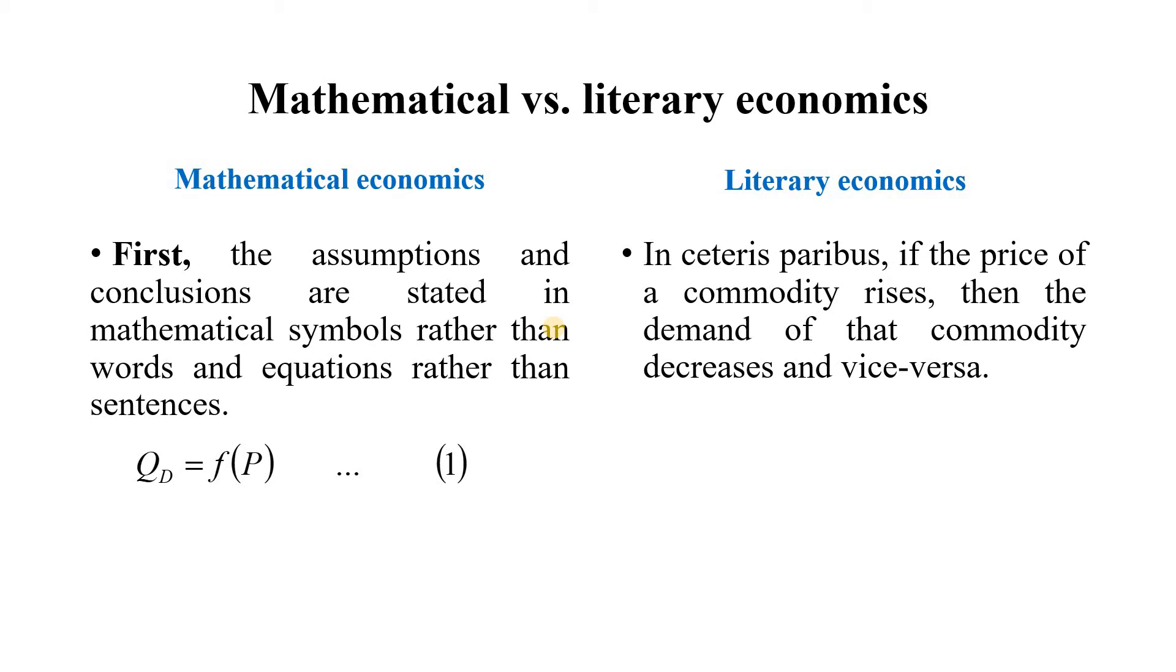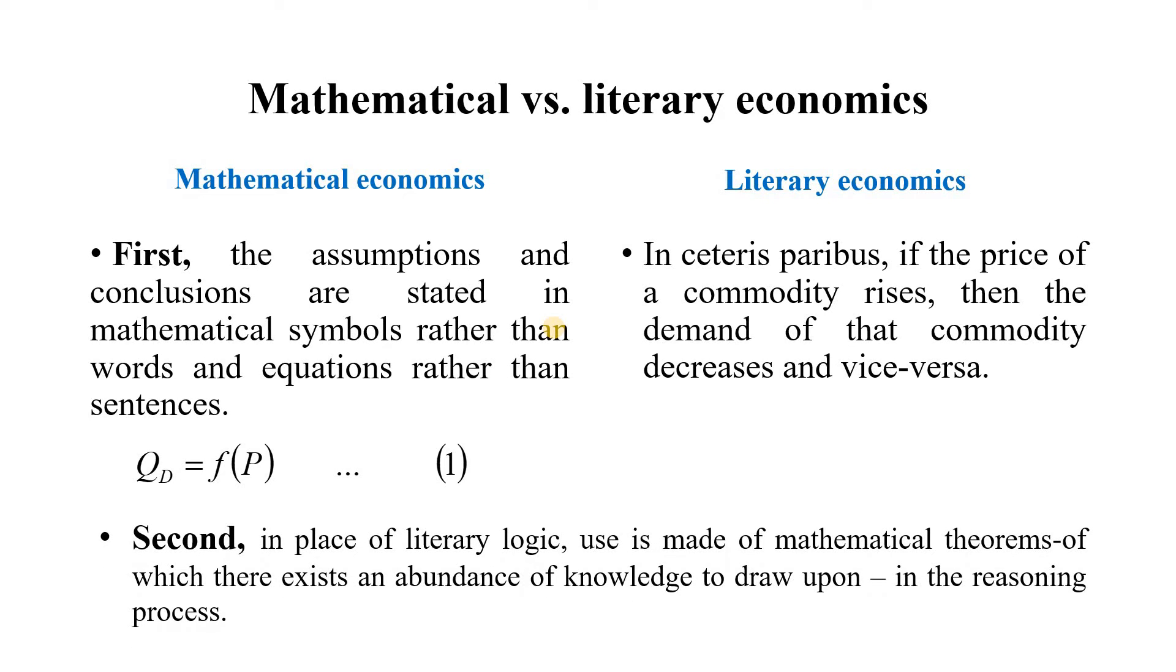In the second phase, in place of literary logic, use is made of mathematical theorems, of which there exists an abundance of knowledge to draw upon in the reasoning process. Equation 1 defines the function but does not reveal the sign of the relationship between these two variables, Qd and P. Qd stands for quantity demanded and P is the price of a particular commodity, and f is a functional notation.